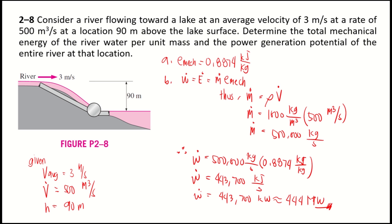In an actual system, the power output would be less than 444 megawatts because of losses and inefficiencies.